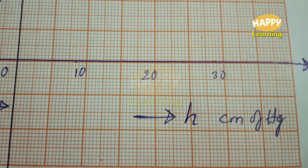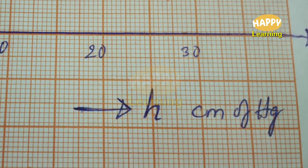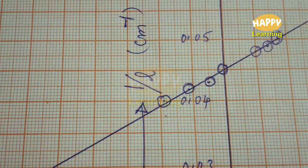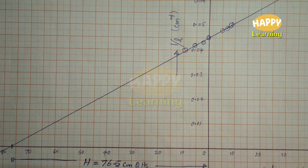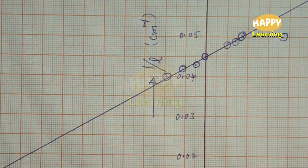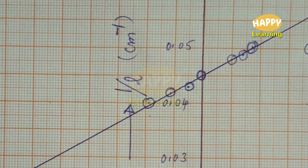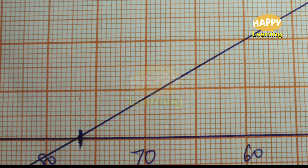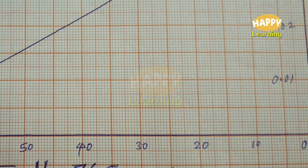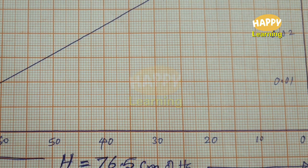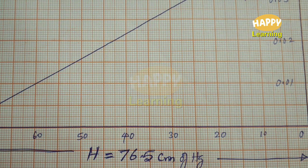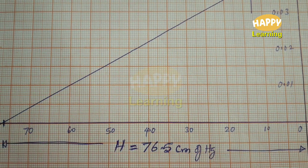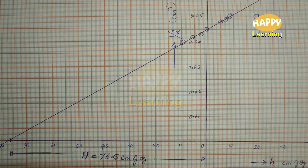Now a graph is drawn taking h on the x-axis and 1/L on the y-axis. The graph is a straight line with both x and y intercepts. The graph cuts the negative x-axis, and that value is noted. The negative x-axis intercept is the atmospheric pressure value. Here it is capital H equal to 76.5 cm of Hg. So from the 1/L vs h graph, we have noted the atmospheric pressure as 76.5 cm of mercury column.